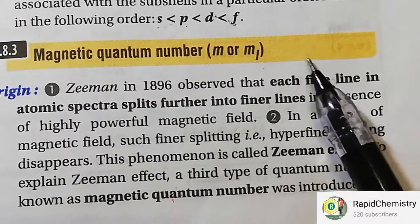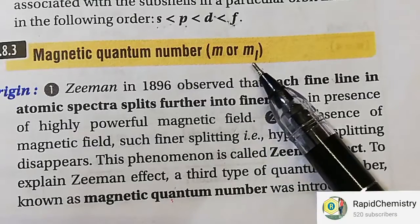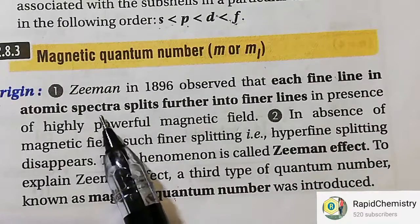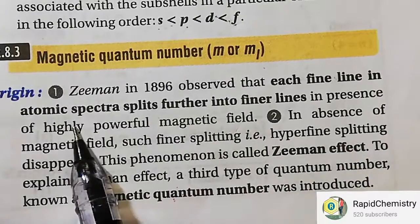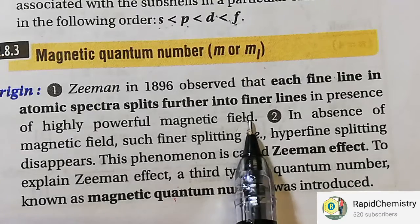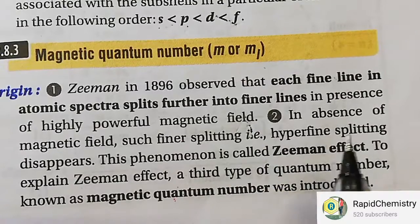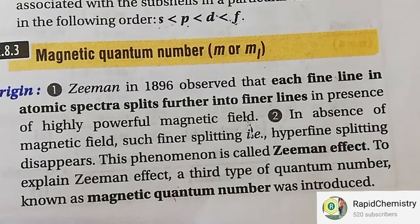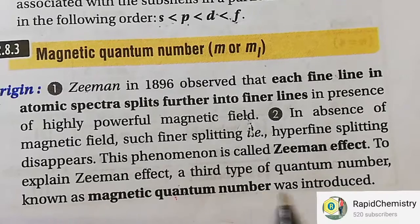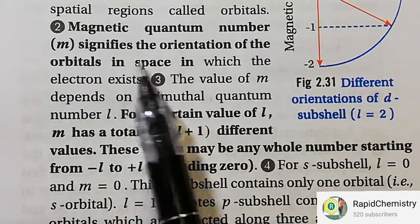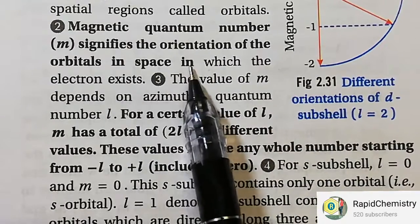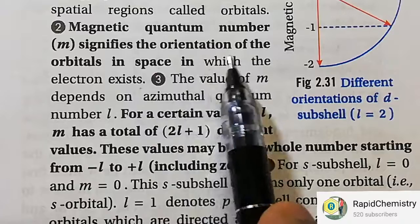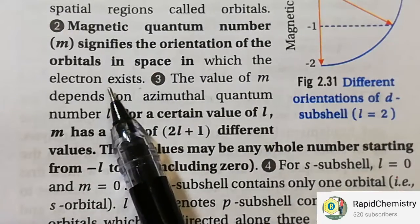Next, we will study the magnetic quantum number and how it came about. In the year 1896, Zeeman observed that each fine line in the atomic spectra splits further into finer lines in the presence of a highly powerful magnetic field — which is called the Zeeman effect. To explain the Zeeman effect, the scientist Zeeman suggested another quantum number: the magnetic quantum number. The magnetic quantum number signifies the orientation of the orbitals in space in which the electron exists.